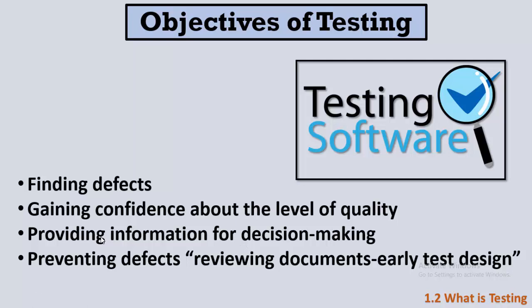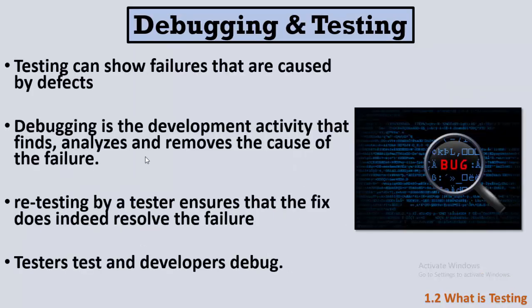The last objective of testing is to prevent defects. If we review documents and design tests early, defects will be minimized and most of them will not happen. These are the objectives of testing. Now let's understand the difference between debugging and testing.